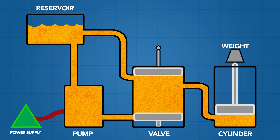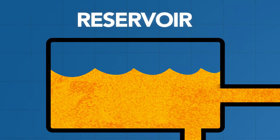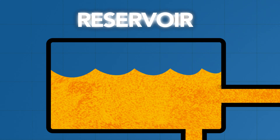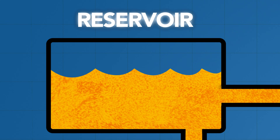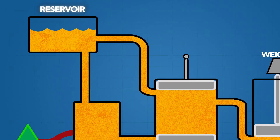The hydraulic system is made up of five basic components. The first being the reservoir. This contains the fluid used in the system, most often being hydraulic fluid.